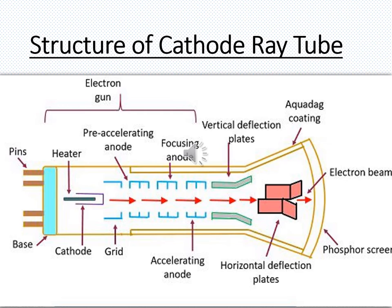The electron gun assembly consists of a heater, a cathode, a control grid, and three anodes. The heater heats the cathode, which consists of nickel oxide coating or similar material, causing it to emit electron beams. These electron beams pass through the control grid. The cathode is a negative electrode and the control grid is more negative than the cathode. It is the control grid that controls the amount of electron beam that flows to the next stage.